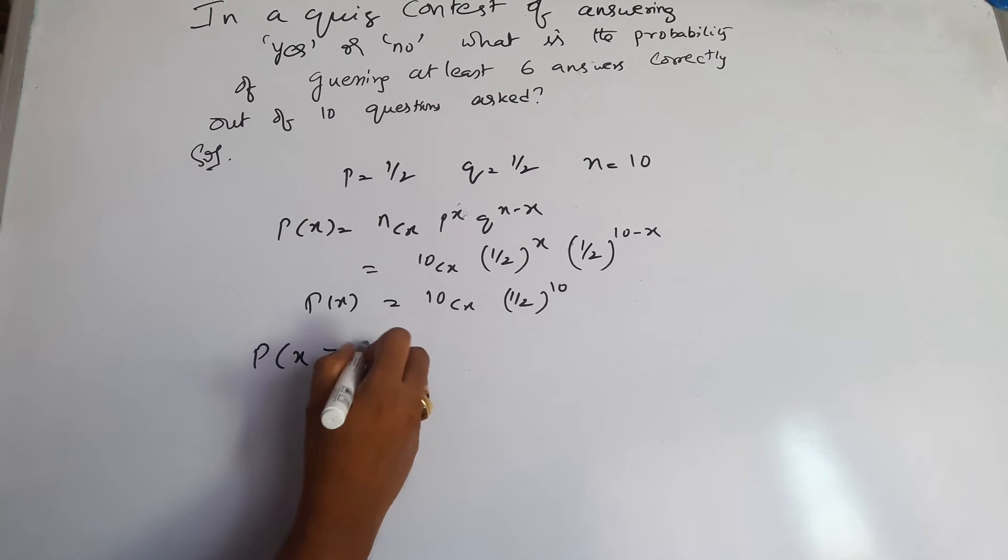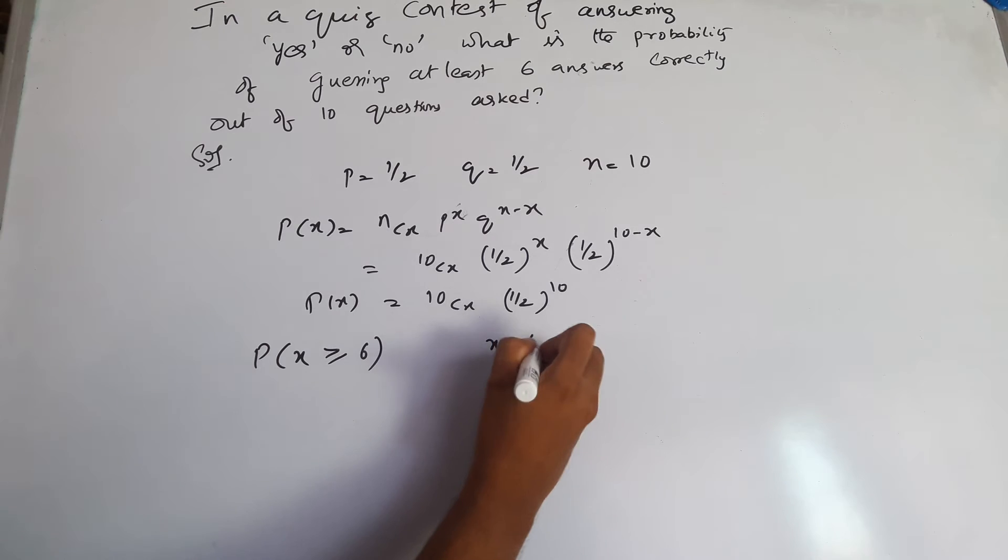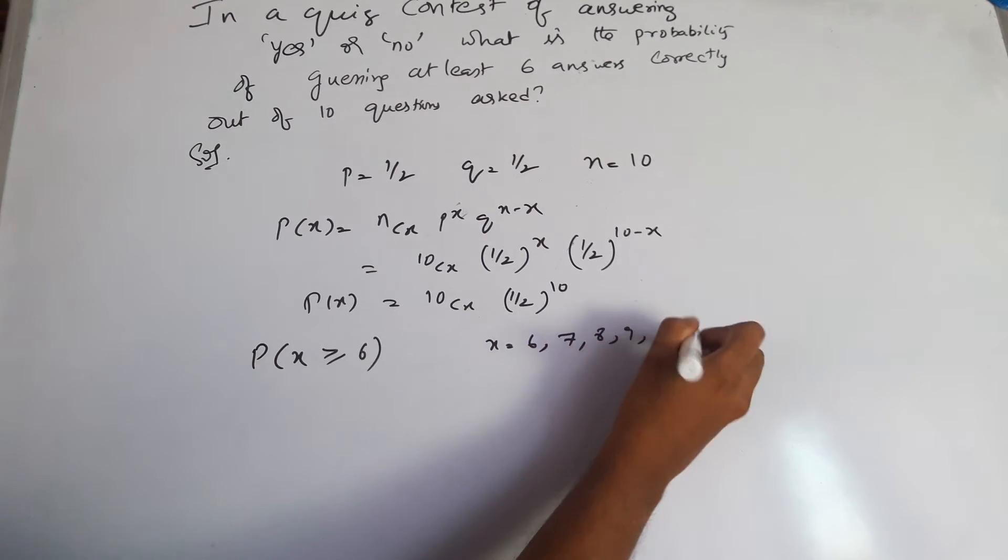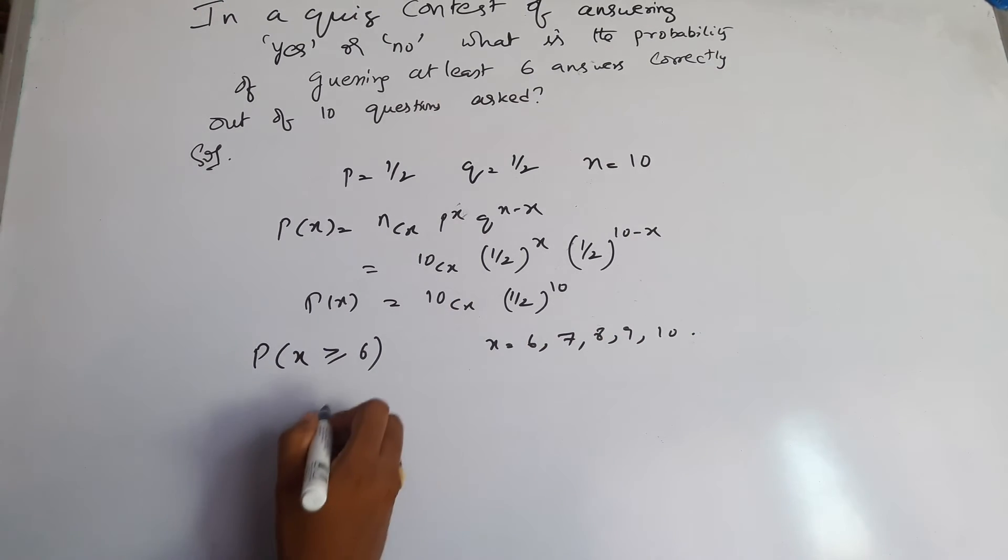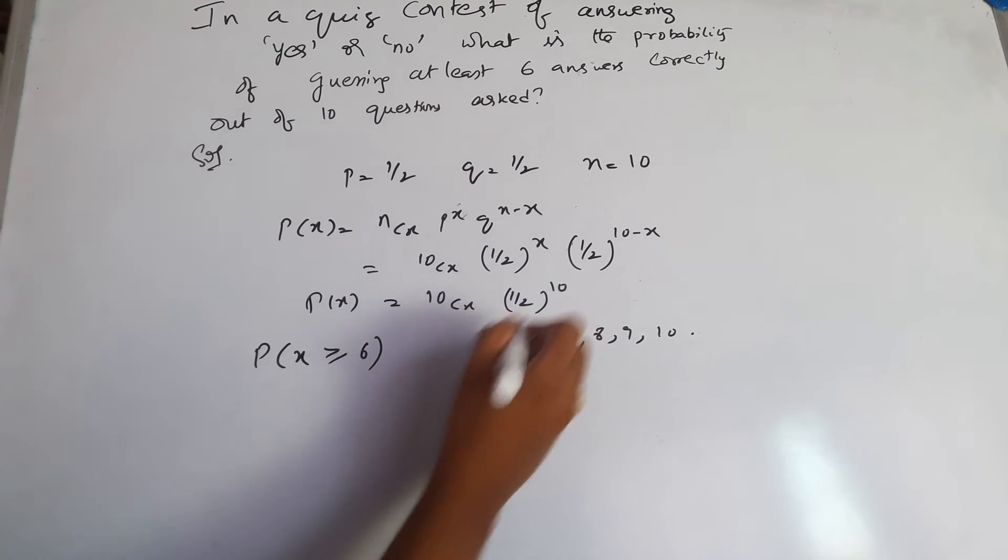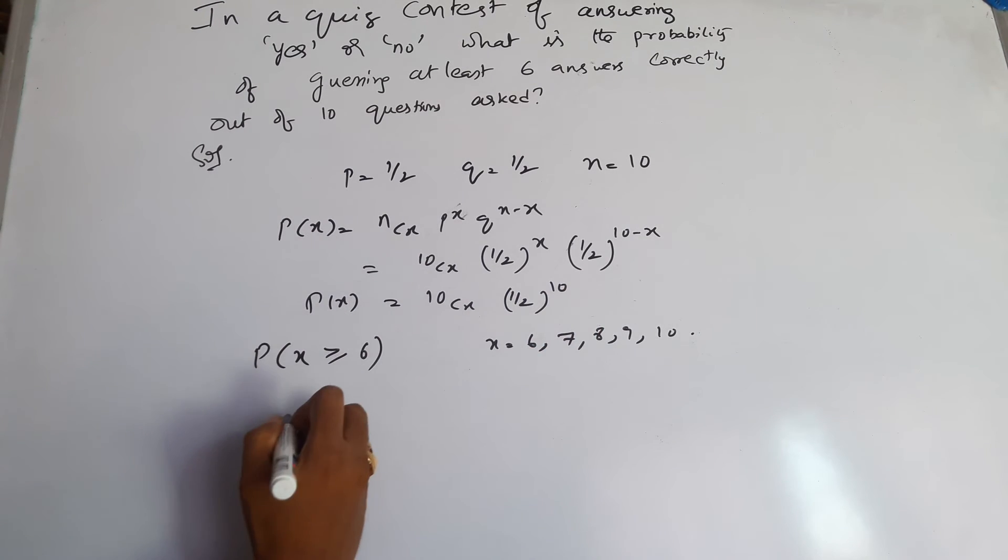From P of X, we need to find P of X greater than or equal to 6 for X equals 6, 7, 8, 9, and 10. We have one by two to the power of 10 as the common factor.